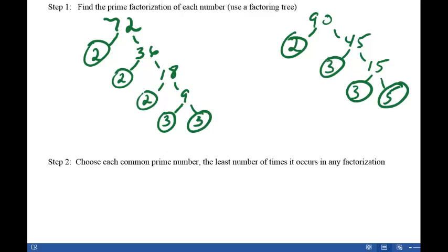Now let's look at step 2. Choose each common prime number the least number of times it occurs in any factorization. So you'll notice that the factor 2 occurs 3 times in the factorization of 72, and only one time in the factorization of 90. So that means the least number of times it occurs is once. So we write down one factor of 2.